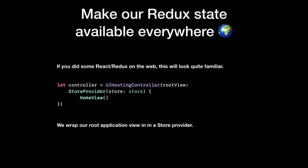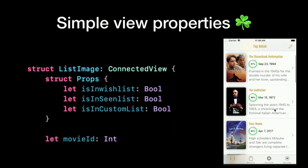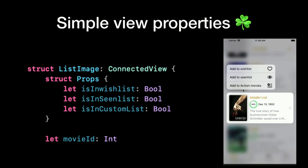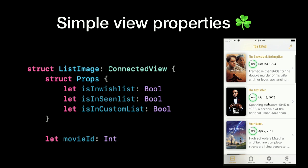You will wrap your root hierarchy — your home view — into a store provider, and it will inject your store as an environment object and will make your application state available in any view. And for that, you will need to use a connected view. To illustrate my point, I will make a very simple component — it's a little icon that animates when I add the movie to a wish list, seen list, or any custom list, and it will display an icon. This is the code that controls this view.